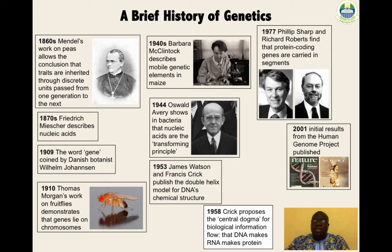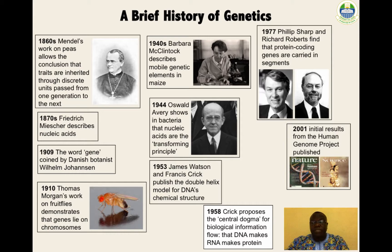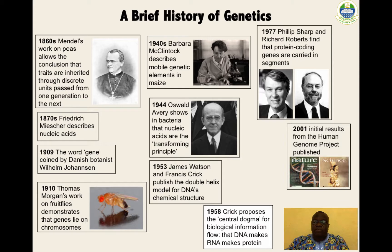Three major events in the mid-1800s led directly to the development of modern genetics. In 1859, Charles Darwin published 'The Origin of Species,' describing the theory of evolution by natural selection. In 1866, Gregor Mendel published 'Experiments in Plant Hybridization,' laying out the basic theory of genetics, though it was widely ignored until 1900. In 1871, Friedrich Miescher isolated nucleic acid from pus cells.